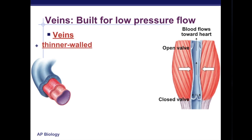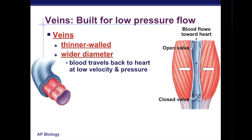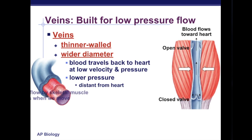Veins are built for a much lower pressure environment and so have a thinner wall — they don't have to withstand the same force of the heart pumping. They have a wider diameter, which allows for collection of blood in the veins and for blood to travel back to the heart at a much lower velocity and pressure. This lower pressure is partly due to being farther from the pumping mechanism, so blood has a challenge making it back to the heart. Skeletal muscle movements — as you sit, fidget, get up and move, especially when exercising — help facilitate movement of blood back toward the heart. Blood can pool in your legs when you sit still for long periods; on a flight, you're encouraged to get up and move so that blood doesn't pool long enough to form a clot, which could be potentially life-threatening.